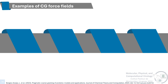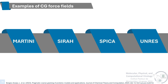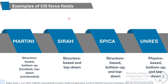Here I'm going to name four popular coarse-grained force fields and their classifications. Four popular coarse-grained force fields are Martini, Syrah, Spica, and Ambras. We can see that Martini, Syrah, and Spica use a structure-based implementation, while Ambras uses a physics-based implementation. We can also see that all of them, except Syrah, use both bottom-up and top-down parameterization approaches.